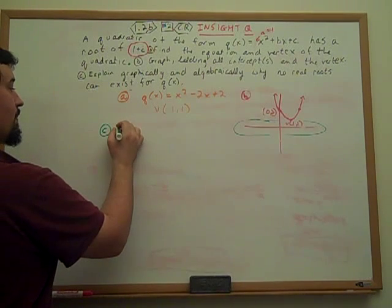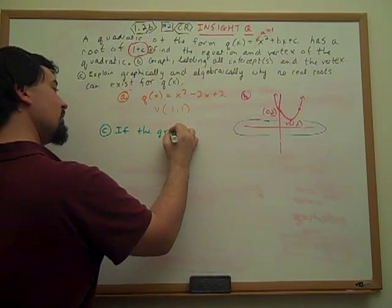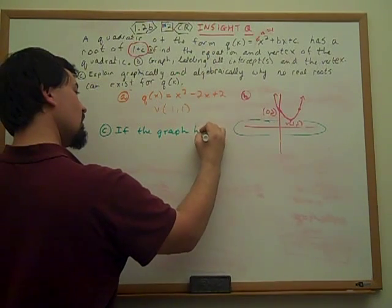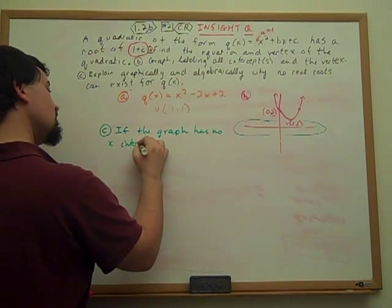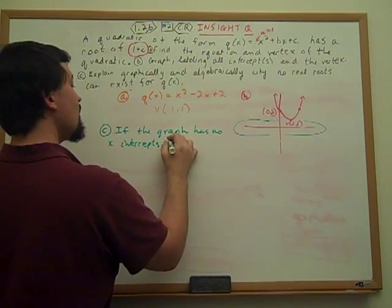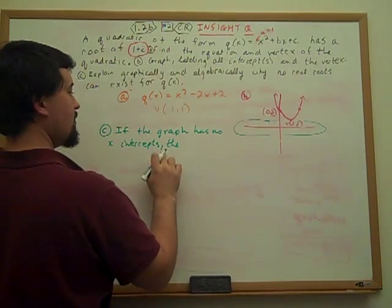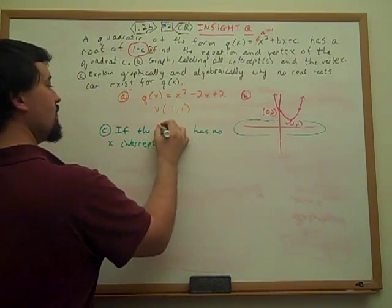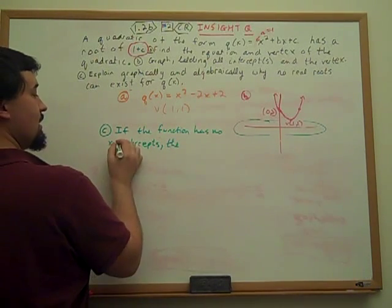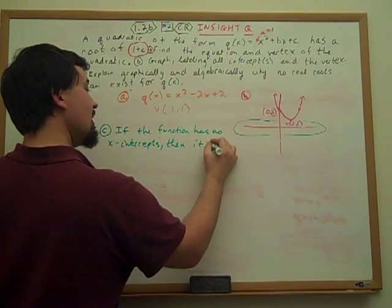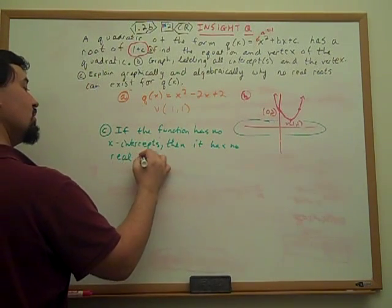So for part C, if the graph has no x-intercepts, or if the function has no x-intercepts, then it has no real roots.